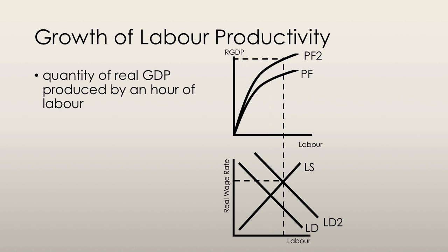To summarize: when we have an increase in the productivity of labor, we have a movement upwards from production function one to production function two. Then we have a movement along the second production function when there is an increase in labor demand.